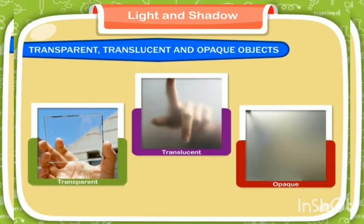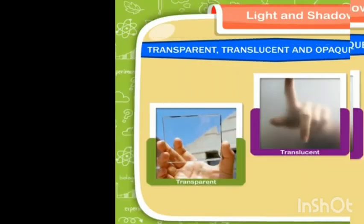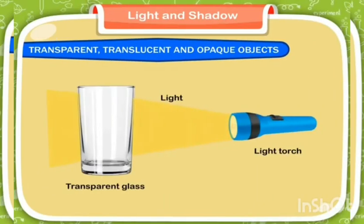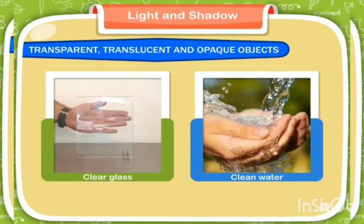Transparent objects are those objects through which light can pass completely. For example, clear glass and clean water. We can see through transparent objects.